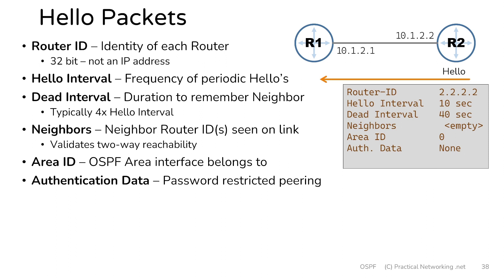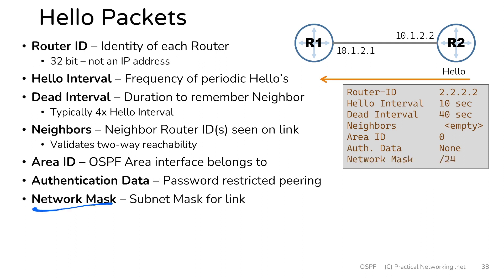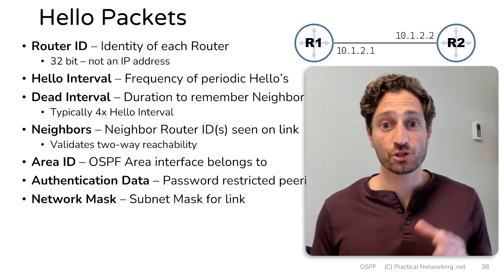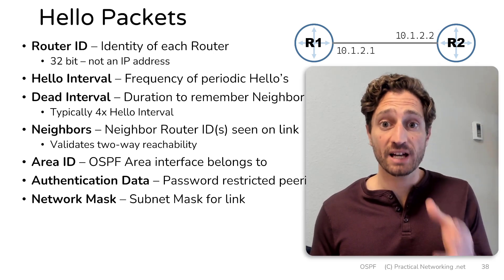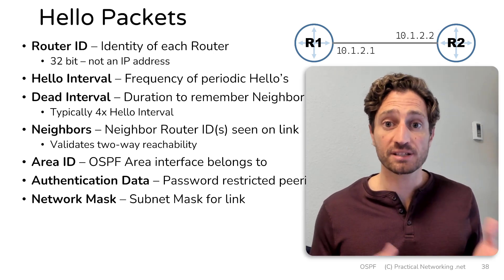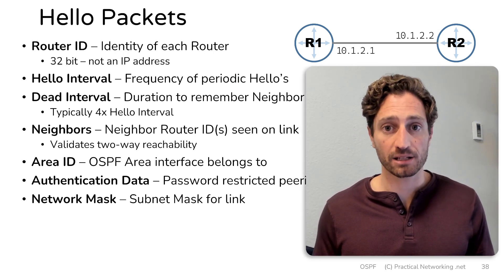Finally, this brings us to the network mask. This is also a value that is included in all the hello packets. In this case, router 2 believes this IP address to be part of a /24 network. So those are the first seven items we've discussed inside a hello packet.